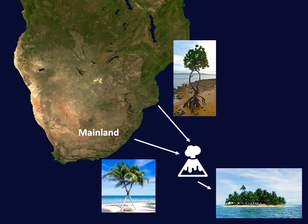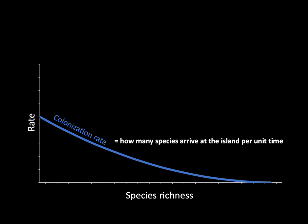Let's go a little deeper, thinking specifically about colonization and extinction rates and how they change through time — how will those rates differ between islands soon after formation compared to many years later when lots of species already occur on it? On this graph, the rate of colonization is shown in blue, plotted against species richness. We'd expect species from the mainland to gradually colonize the new island, with colonization rate declining as more and more species colonize the island, simply because there are then fewer species on the mainland that haven't yet colonized the island.